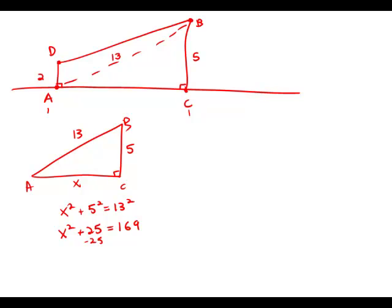Subtract 25 from both sides. We get X squared equals 144, and that means that X equals 12. So that's huge. Now we have that length 12.